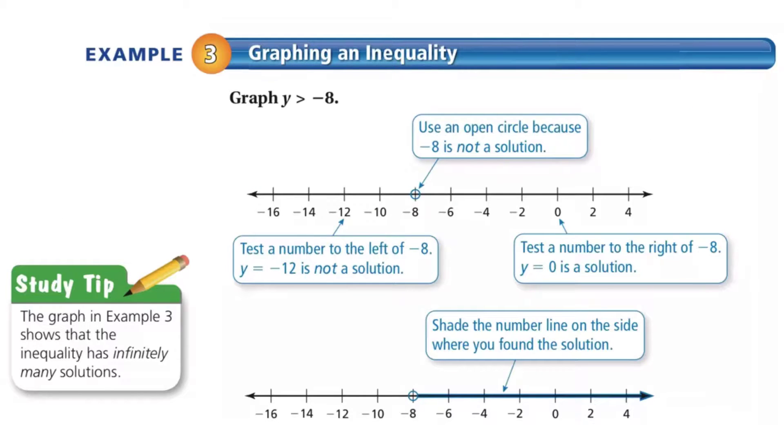Here, in example 3, we're supposed to graph y is greater than negative 8. Because it does not say or equal to, negative 8 is not part of the solution, but it is where we start our graph. So, we use an open circle to show that that's where it starts, but it's not included. Then, because it's y is greater than, we'll want the arrow pointing to the right-hand side to show all the greater than solutions. One trick that I like to use in class is the greater than symbol looks like an arrowhead that's pointing to the right. It'll help remind you that the arrow needs to point to the right. So, it's an open circle with an arrow pointing to the right.